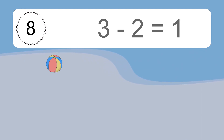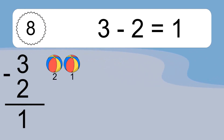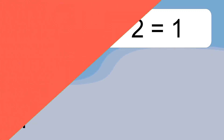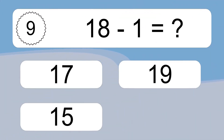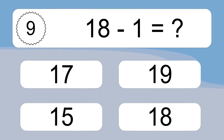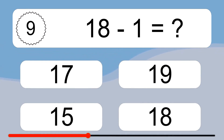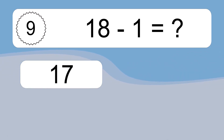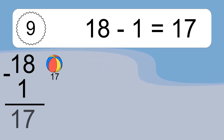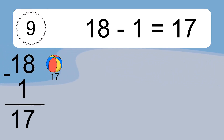3 minus 2 equals 1. Let's count it to 1. 18 minus 1 equals what? 18 minus 1 equals 17. Let's count it. 17.